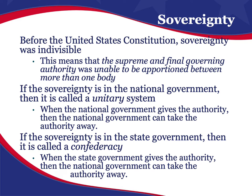Before the United States Constitution, sovereignty — the ability or power to govern — was indivisible. This means the supreme and final governing authority was unable to be apportioned between more than one body. You couldn't have states hold some power and the federal government hold some power; it was one or the other. Either small divisions of land had sovereignty, or there was one centralized sovereign being like a monarchy or parliament.